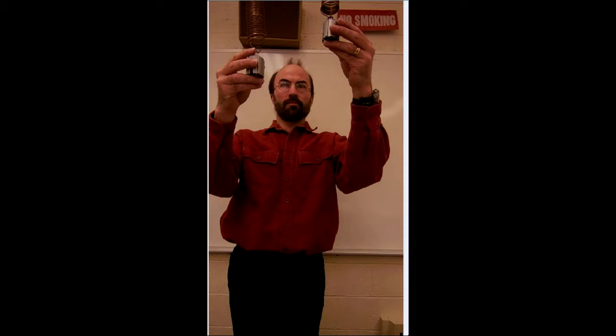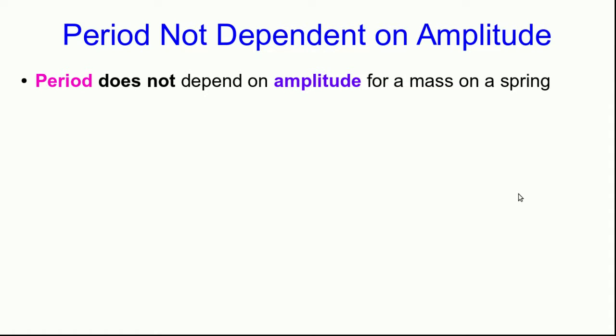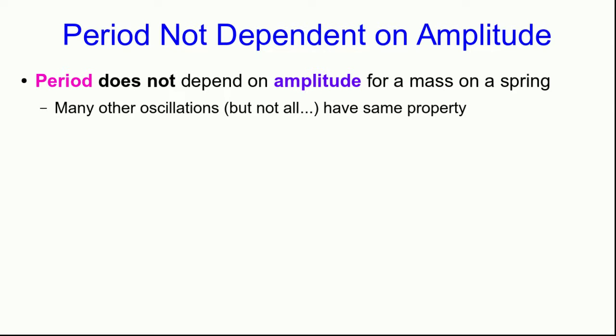It seems to make sense that if you set a mass on a spring oscillating with a larger amplitude, it ought to have the longer period — it has farther to go, so it should take longer. But if you actually try it out, you see that's not true. With these masses and springs released at the same time, you can see that the one on the right is oscillating with a larger amplitude, but they're oscillating in time with each other — they have the same period, despite the amplitudes being different.